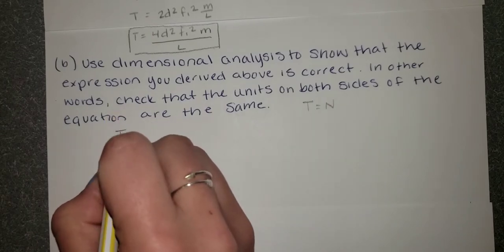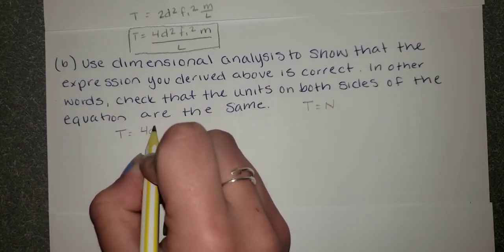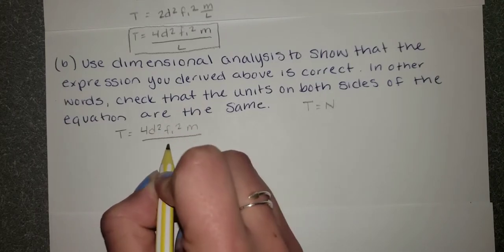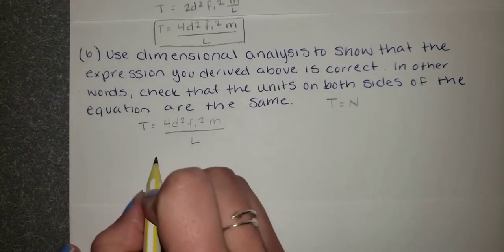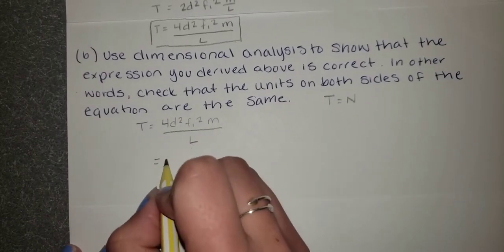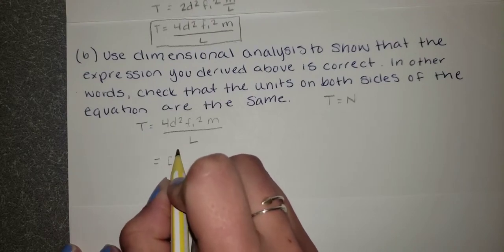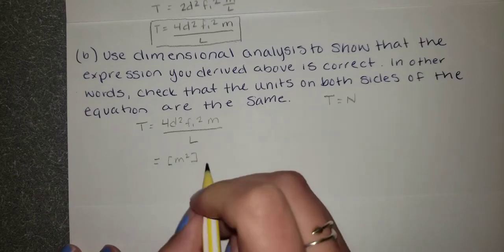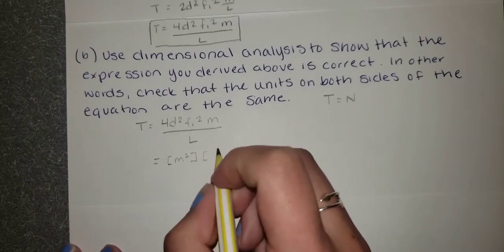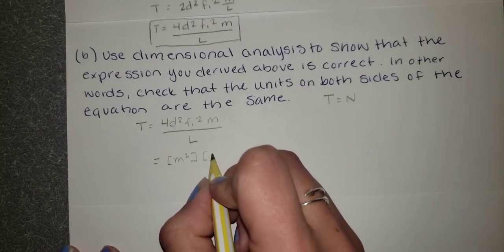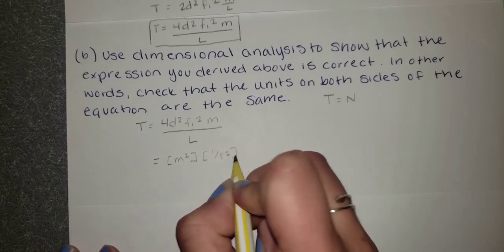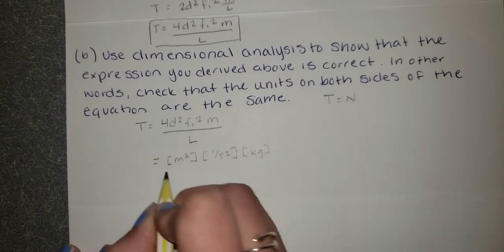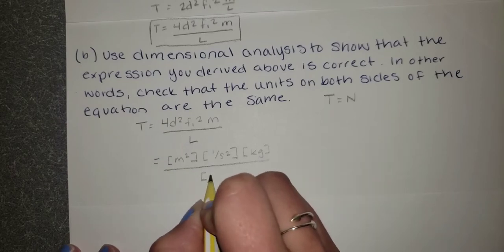So if we rewrite this equation, we're going to get T equals 4d squared f1 squared m divided by l. And if we input the SI units for these terms, we're going to get d equals meters and the variable is squared, so we're going to put squared right there. We're also going to get frequency squared, which would be either hertz squared or one over second squared. And we're also going to get that mass equals kilograms. And lastly, length is still equal to meters.